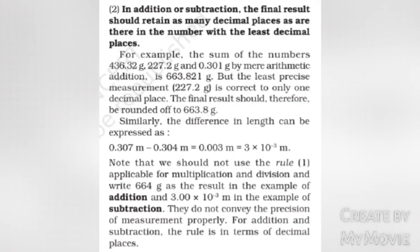Rule 2: In addition or subtraction, the final result should retain as many decimal places as there are in the number with the least decimal places. For example, the sum of 436.32 g, 227.2 g, and 0.301 g by arithmetic addition is 663.821 g, but the least precise measurement, 227.2 g, is correct to only one decimal place. The final result should therefore be rounded off to 663.8 g. Similarly, the difference 0.307 m − 0.304 m equals 0.003 m, which equals 3 × 10^-3 m.